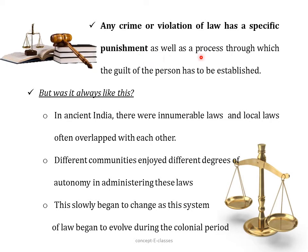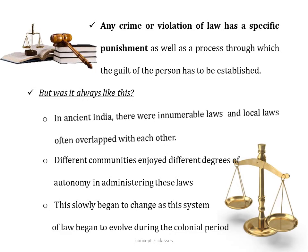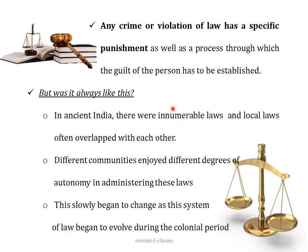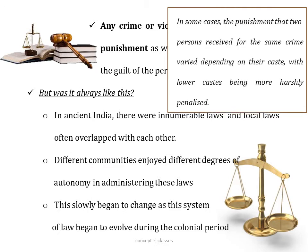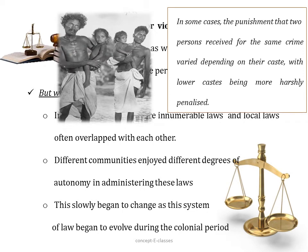If a person commits a crime, there is a process through which the guilt of the person has to be established. Now, was it always like this in India? No. In ancient India, there were innumerable laws and the local laws often overlapped with each other. Even different communities, based on their own whims or interests, used to administer these laws. For example, if two persons committed a crime, the punishment they received depended on their caste. The lower caste would be treated more harshly than the upper caste people. Such overlapping often happened during ancient times.